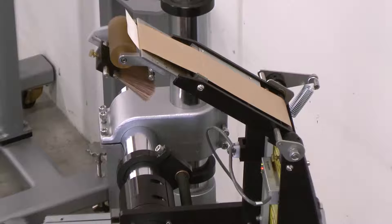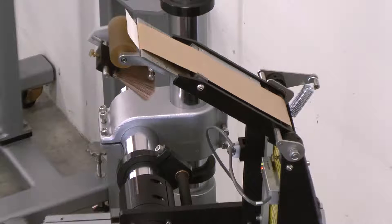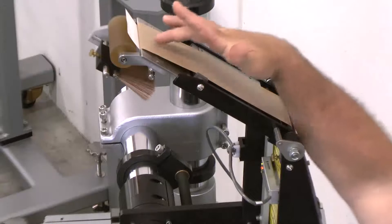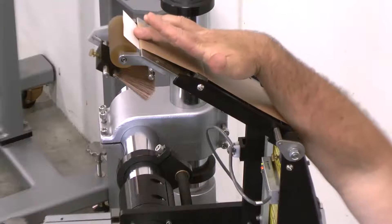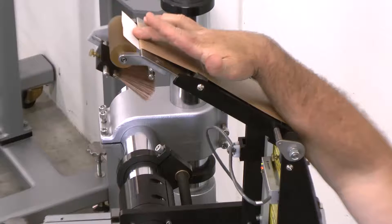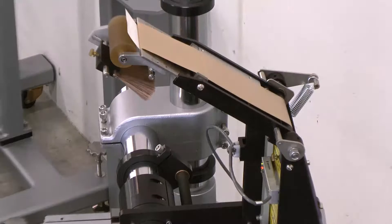Once the sensor has been trained to the material, the label sensor position must be set for the proper label flag. Label flag is the amount of label protruding from the dispense tip. The ideal setting is one quarter to three eighths of an inch.